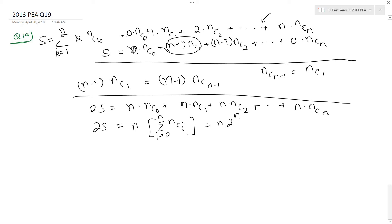I have 2s equals n times 2 to the power n. This implies s equals n into 2 to the power n minus 1.